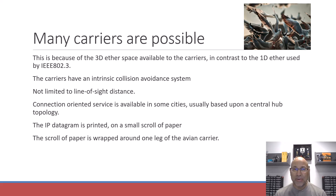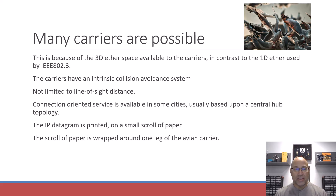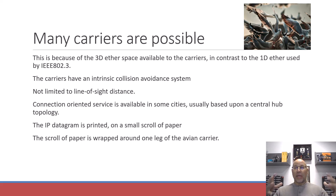The carriers have an intrinsic collision avoidance system — they don't crash into each other very often. Very important: they're not limited to line-of-sight distance. Connection-oriented service is available in some cities, usually based on a central hub topology.